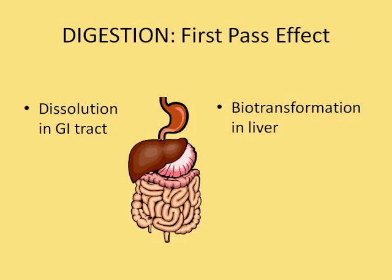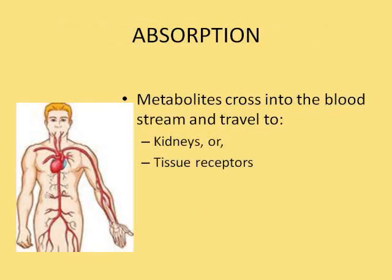Biotransformation also occurs in the liver, where the drug is further broken down into metabolites that can be used in treatment in the body. These metabolites cross into the bloodstream, and while they're in the bloodstream they either travel to the kidneys and are eliminated, or some of them actually make it to the tissues where they are picked up by receptors and treatment for the condition is begun.